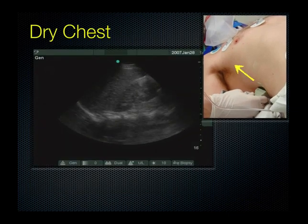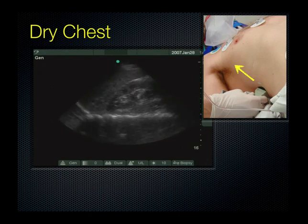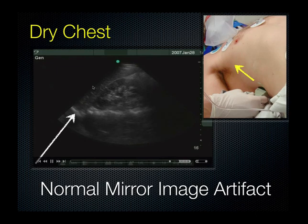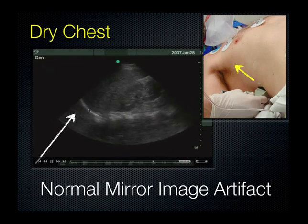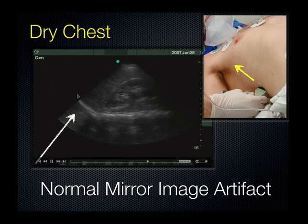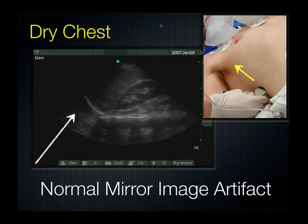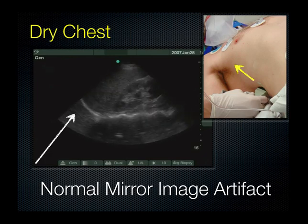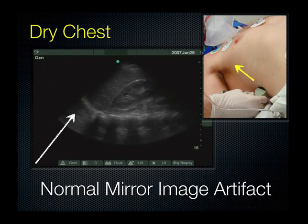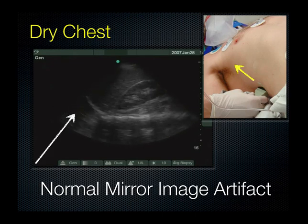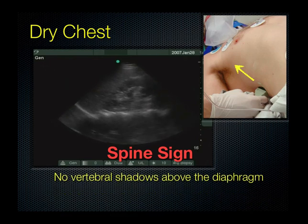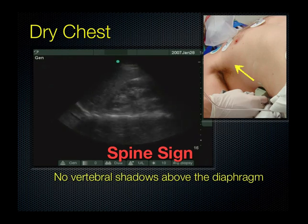Here's an example of a chest with no fluid, and what we're seeing is something called a mirror sign. A mirror image artifact occurs when ultrasound beams pass through the liver or spleen, reflect off the diaphragm, and cannot pass through the lung because the air scatters the beam. The probe reads the delayed reflection as liver or spleen tissue deeper to the diaphragm, so it appears that there's liver on both sides of the diaphragm. You also cannot see the shadows of the vertebral bodies above the diaphragm — we call this the spine sign — which helps us appreciate that there is no fluid above the diaphragm.